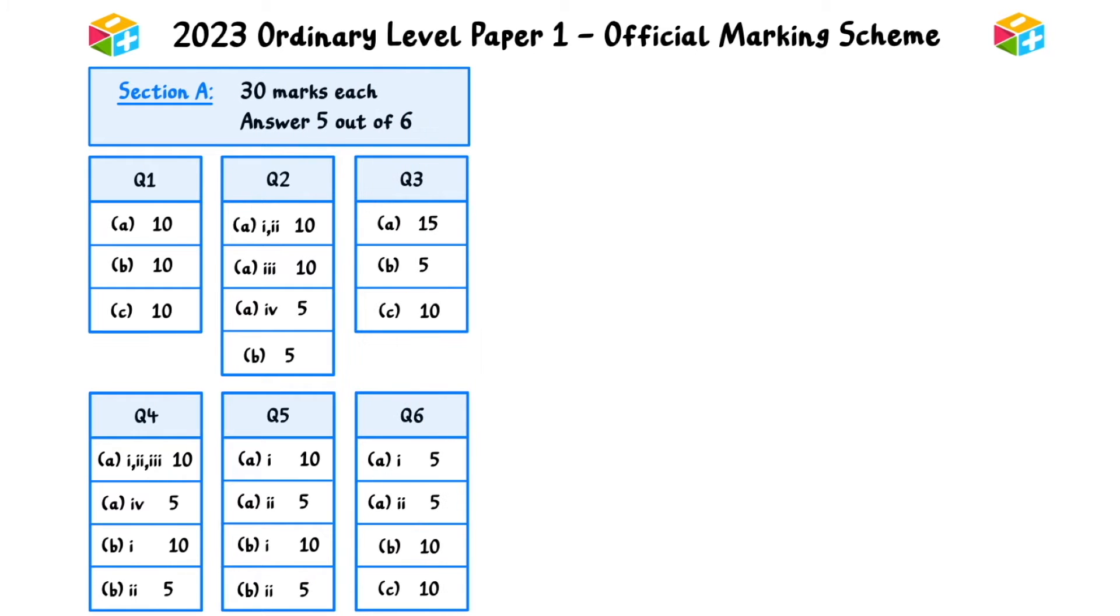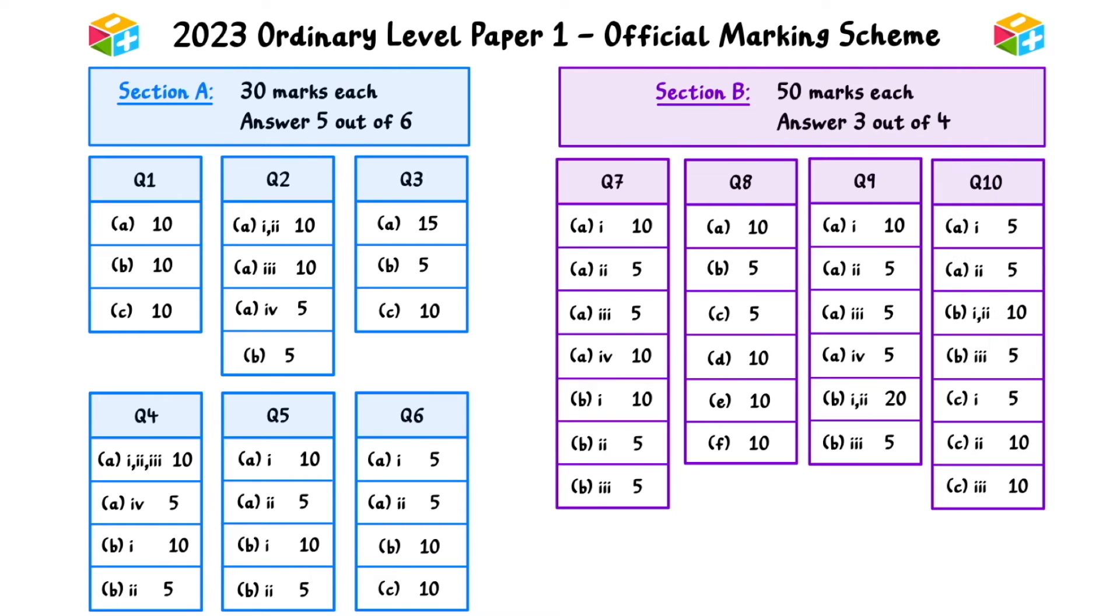In the 2023 Leaving Cert exams, Maths Paper 1 was divided into two sections. In section A, you had to answer 5 out of 6 questions worth 30 marks each. In section B, you had to answer 3 out of 4 questions worth 50 marks each.